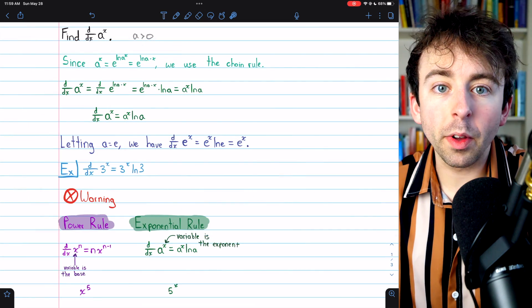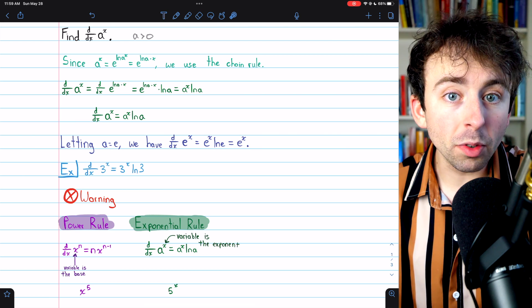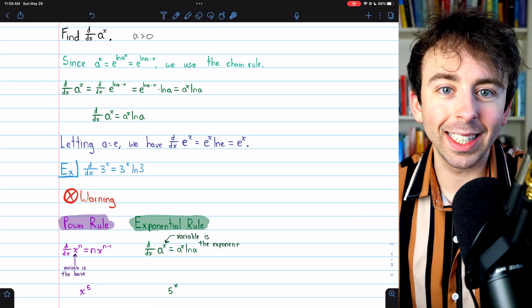And there you go. The derivative of a to the x is just a to the x times ln a. Hope this was helpful. Let me know in the comments if you have any questions, and check out my Calculus 1 playlist for more.